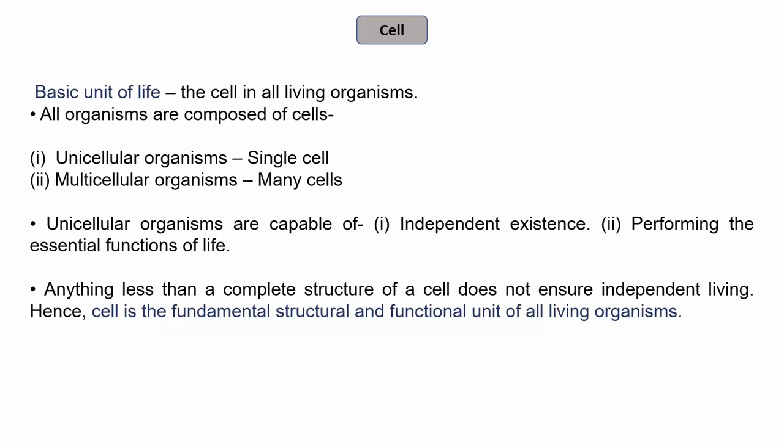Depending on the number of cells present in any organism, they can be divided into two types. Unicellular organisms — as the name suggests, 'uni' means single — are organisms made of a single cell. The other type is multicellular organisms — 'multi' means many — so multicellular organisms are composed of many cells.